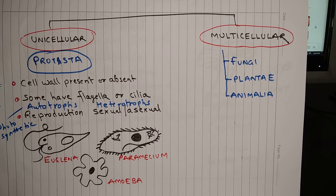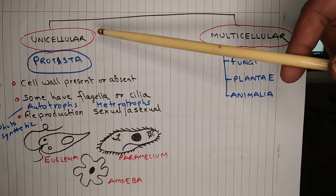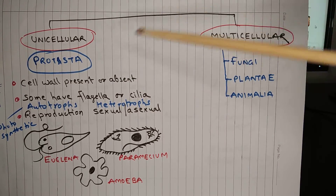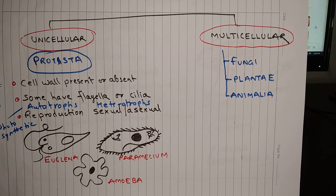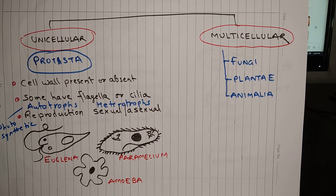Among eukaryotes, we can further classify them as unicellular and multicellular. As the name suggests, organisms made of just a single cell are called unicellular, and those with more than one cell are called multicellular organisms. Kingdom Protista contains all the unicellular organisms, and the rest of the kingdoms contain multicellular organisms.